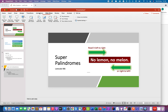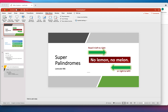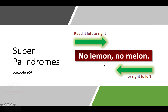Let's get started with the solution. Just before the start, let me reiterate the definition of a palindrome. A palindrome is a number or a string that reads the same from left to right and from right to left — both ways.